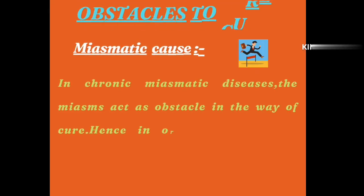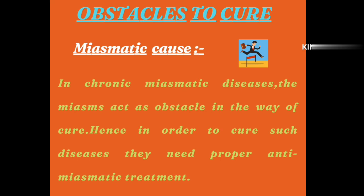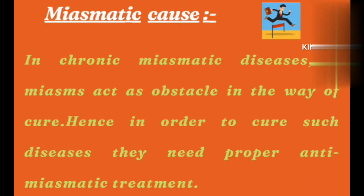The second obstacle to cure can be miasmatic cause. If a chronic miasmatic disease is present and we are selecting the correct medicine but not giving proper anti-miasmatic treatment — for example, if it is a psoric miasm and we are not giving anti-psoric treatment, the medicine selection may be correct but the miasm itself is not being addressed — then the patient cannot be cured. The miasm is working as an obstacle. So if we have to cure it, we must give proper anti-miasmatic treatment.